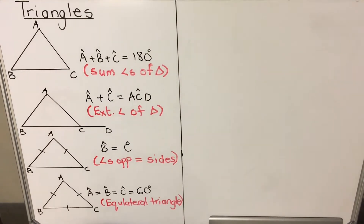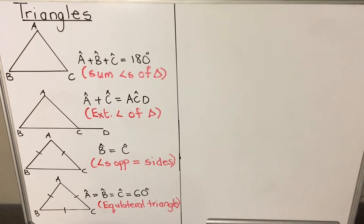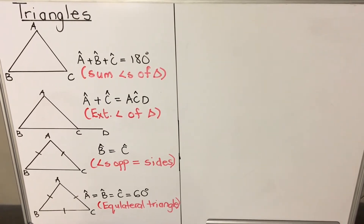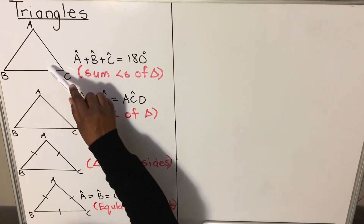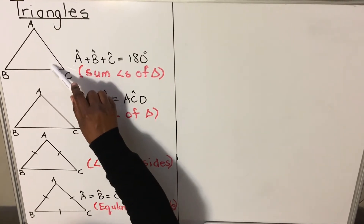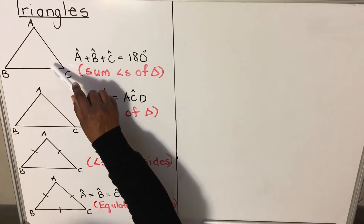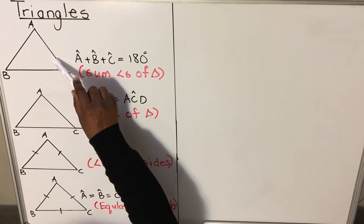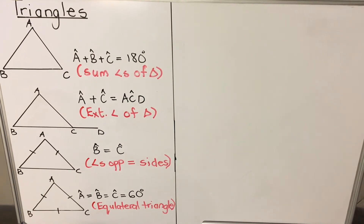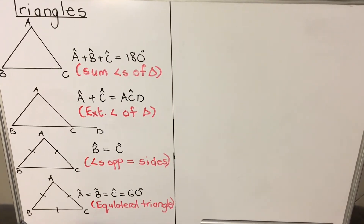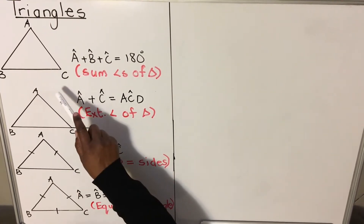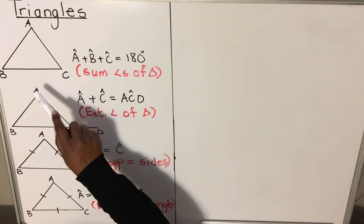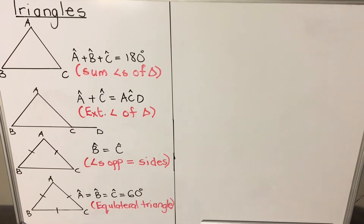What is an angle? An angle is a space between two lines. So this space between that line and that line is an angle. A triangle is a shape that has three sides and three angles.